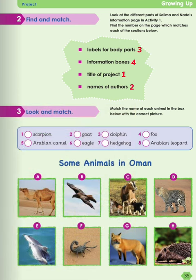Next is look and match. Match the names of each animal in the box below with the correct picture. Number 1, scorpion — picture F. Number 2, goat — picture C. Number 3, dolphin — picture E. Number 4, fox — picture G. Number 5, Arabian camel — picture A. Number 6, eagle — picture B. Number 7, hedgehog — picture H. And the last one, Arabian leopard — picture D.